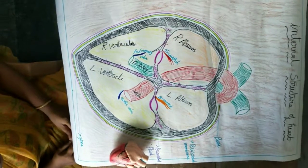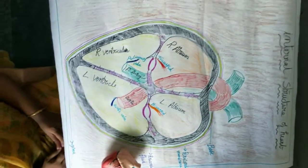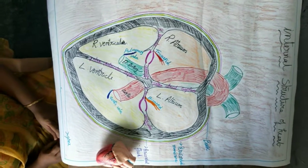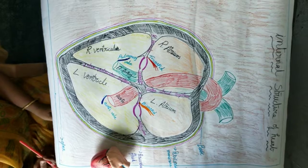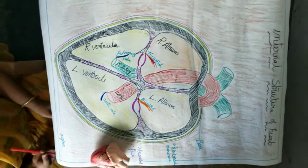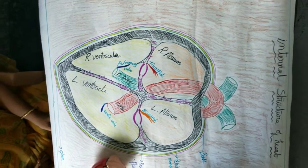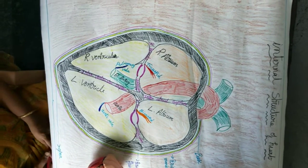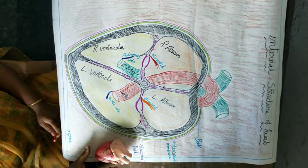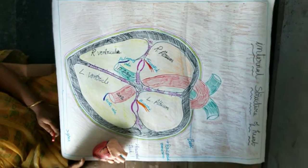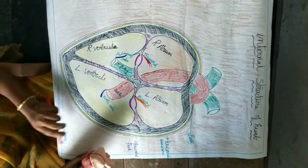Hi students, welcome to Rebelle Homeschool channel. In this class I am going to describe the internal structure of heart. The heart is located between two lungs in the ribcage, slightly on the left side of the chest bone. Heart is pear shaped and it is the size of a man's fist. It weighs 350 grams and it is made up of cardiac muscle.